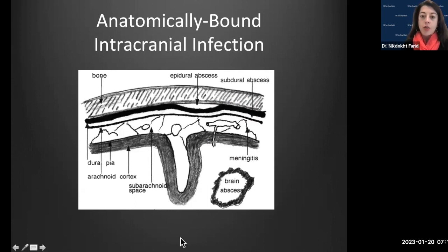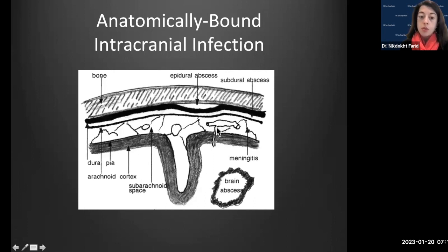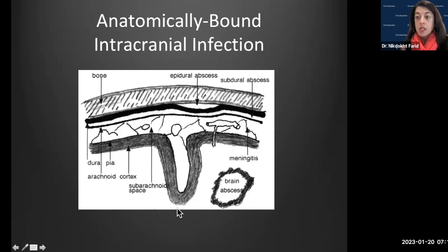Now we'll jump into the anatomically-bound intracranial infection section. Just as we think about hemorrhage being in various compartments — epidural, subdural, subarachnoid, intraparenchymal, and intraventricular — infection is the same. We can have an epidural abscess, subdural empyema, leptomeningitis, brain abscess or encephalitis, and ventriculitis.